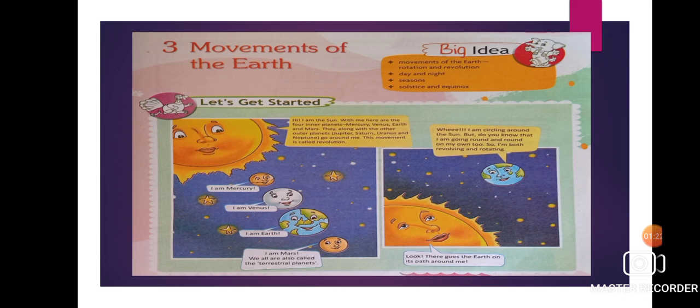First, you can see in your book what the sun is saying. I am the sun. With me, here are the four inner planets. The planets near to the sun are known as inner planets: Mercury, Venus, Earth, and Mars. They, along with the outer planets Jupiter, Saturn, Uranus, and Neptune, go around me. This movement is called revolution.